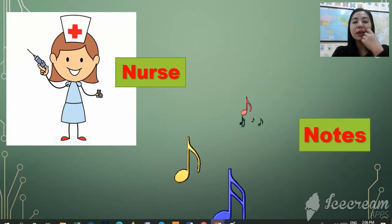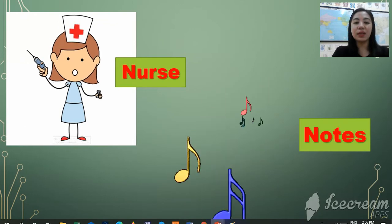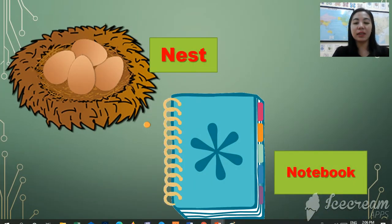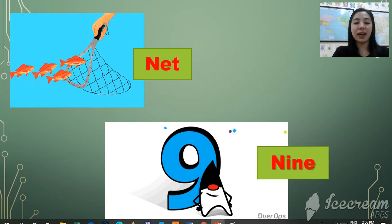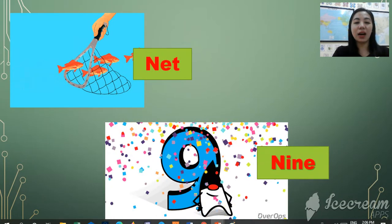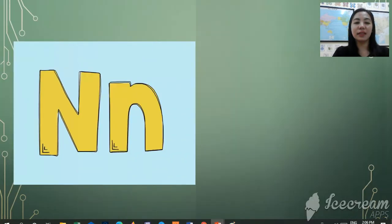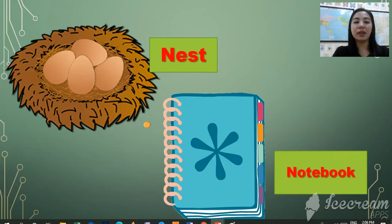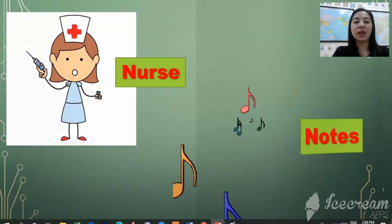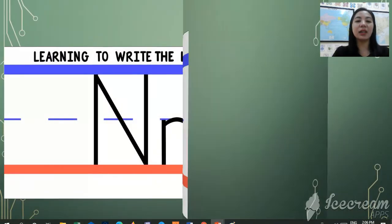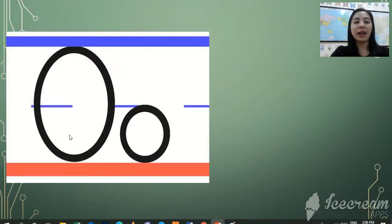Just like the nurse, notes, nest, notebook, net, nine. So these are the examples for the letter N and now let's move to letter O.